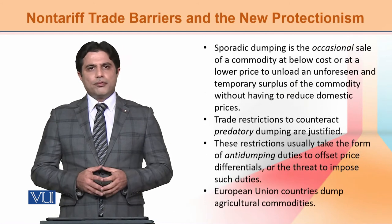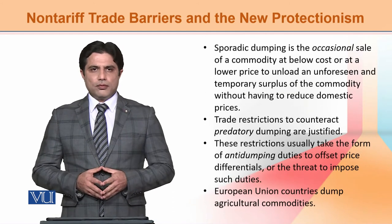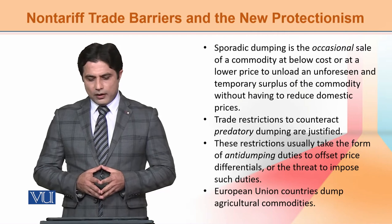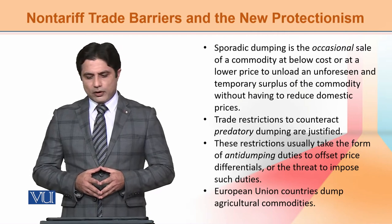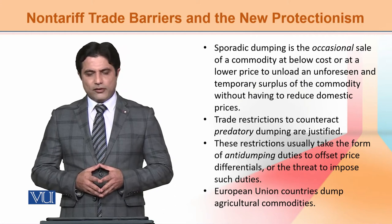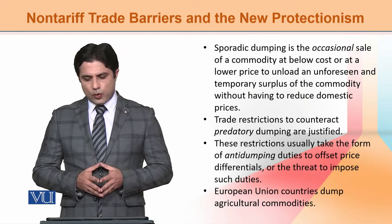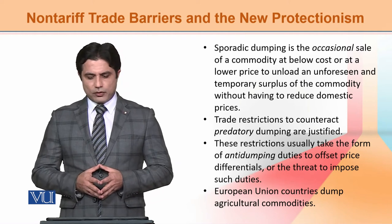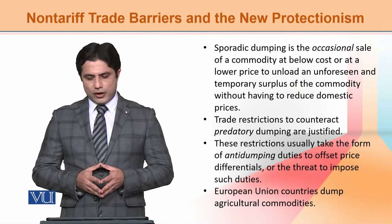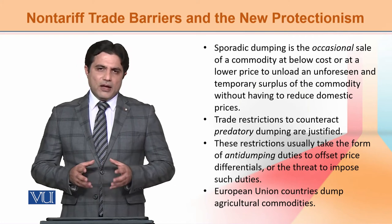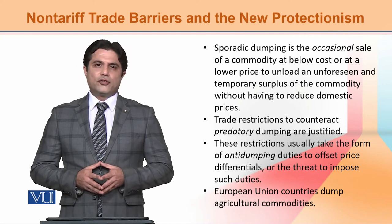The third type of dumping is sporadic dumping. It is the occasional sale of a commodity at below cost or at a lower price to unload an unforeseen and temporary surplus of the commodity without having to reduce domestic prices.